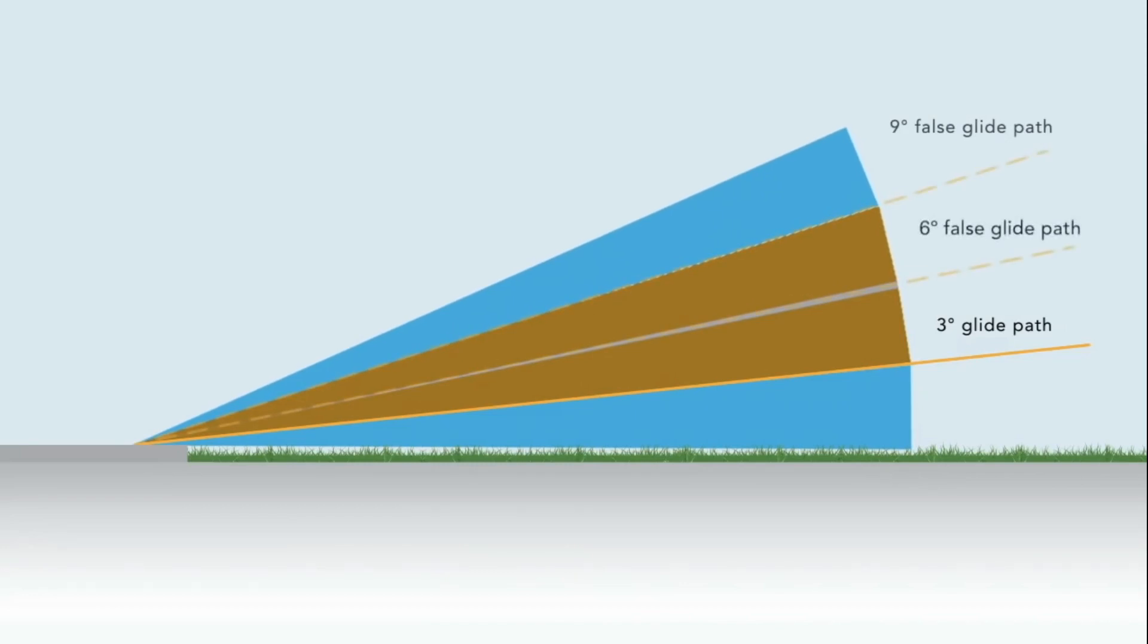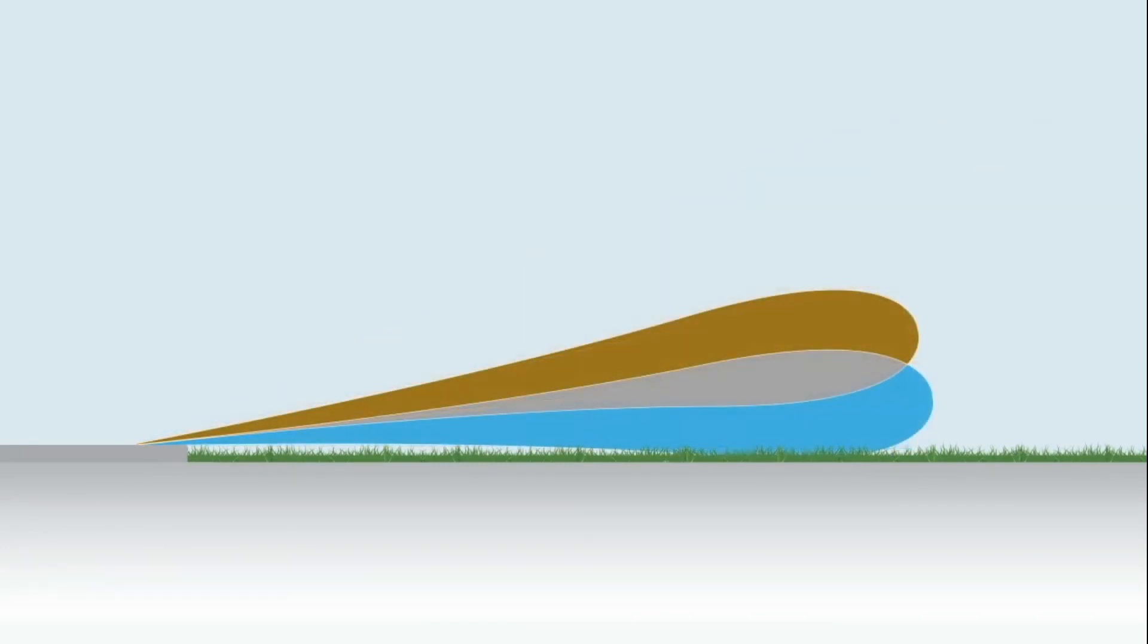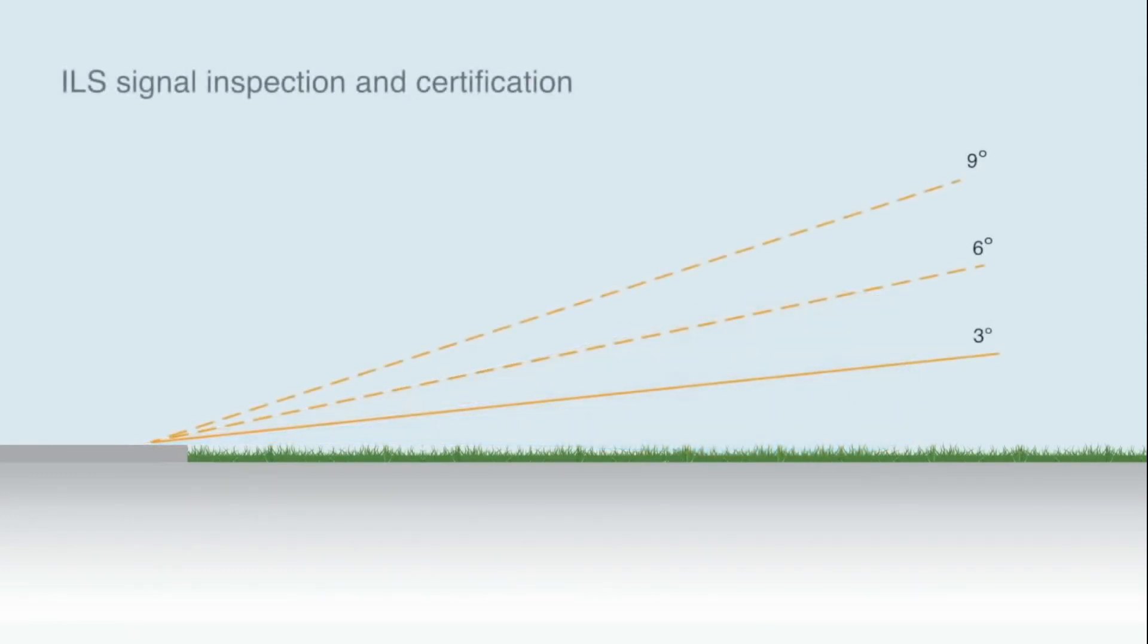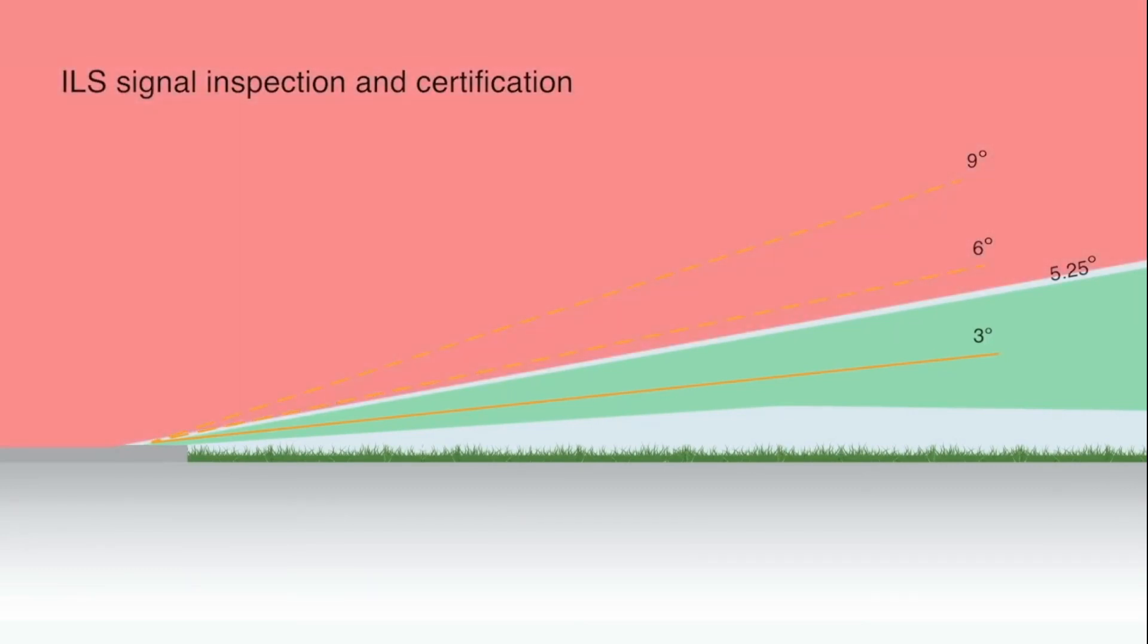The ILS signal is regularly inspected and certified for operational use, which is in accordance with ICAO regulations. However, the upper limit of this flight inspection area has an angle of 5.25 degrees from the runway. This means that ILS signals above the angle of 5.25 degrees, which includes false glide slopes and glide slope reversal signals, are outside the required inspection area.